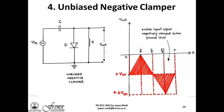For the unbiased negative clamper, the diode is now pointing downwards — anode on top, cathode below. Since the diode points downward, the entire AC signal is clamped negatively into the fourth quadrant. The maximum peak value becomes zero, the DC bias level shifts from zero to −Vm, and the negative peak becomes −2Vm. This is the unbiased negative clamper.